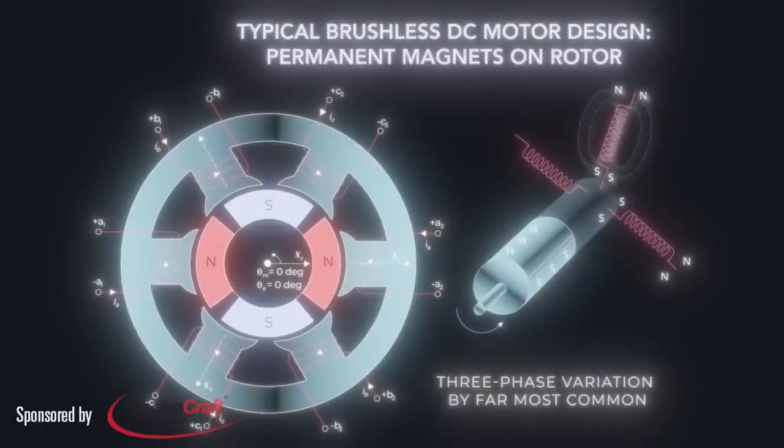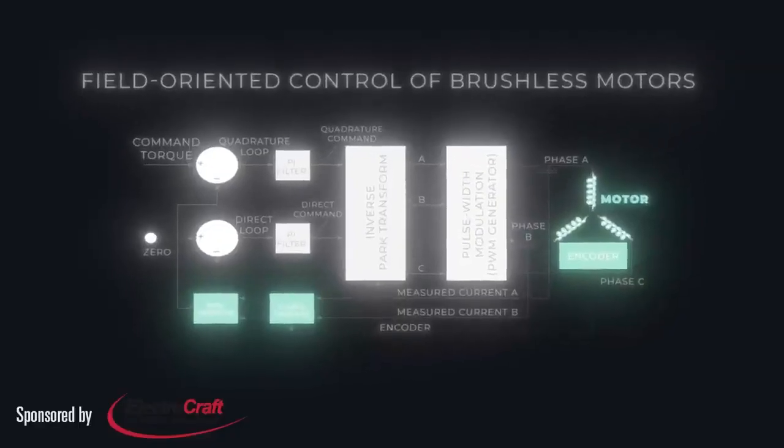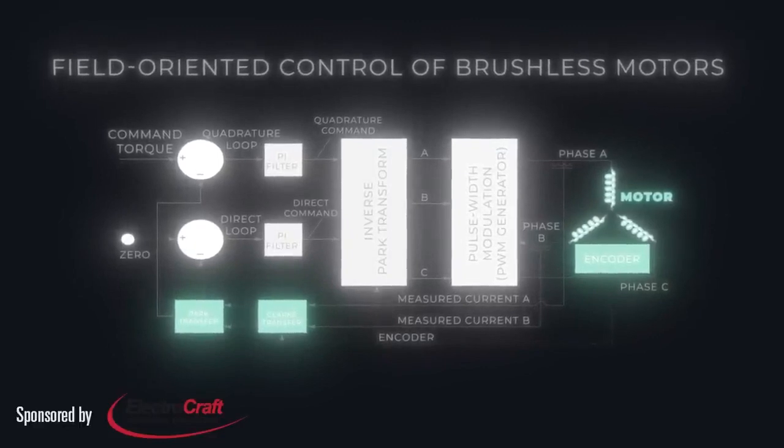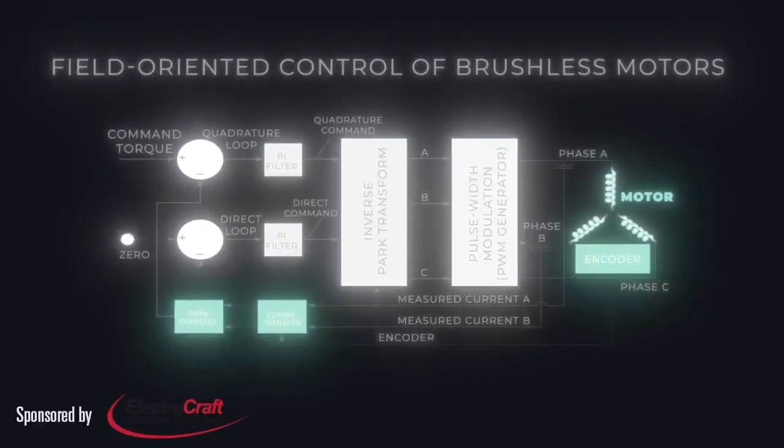The main limitation is that the phase current vectors can only have six discrete directions. In contrast, sinusoidal brushless motor control sinusoidally drives the three motor windings with three currents for smooth rotation of the combined current space vector.